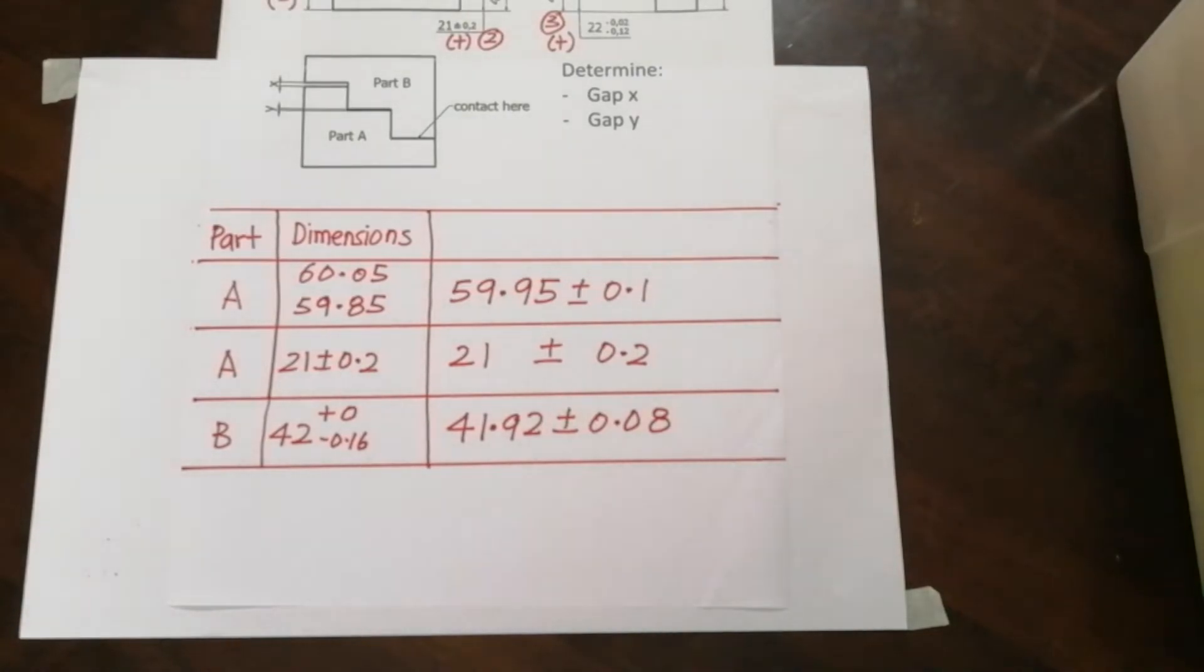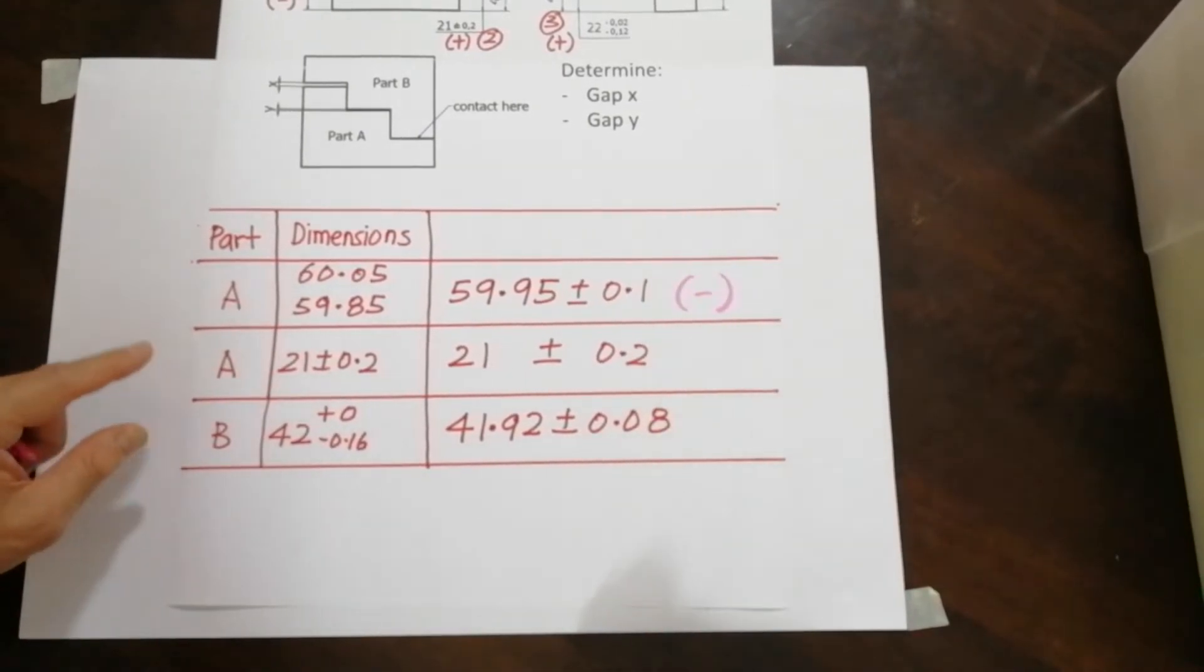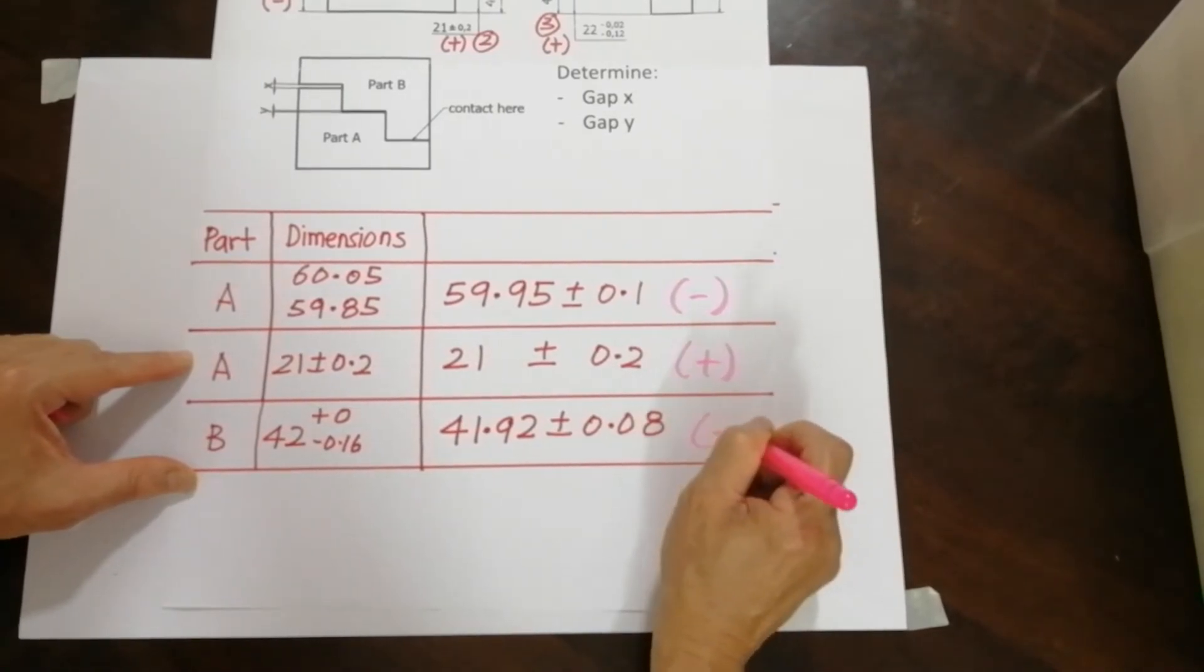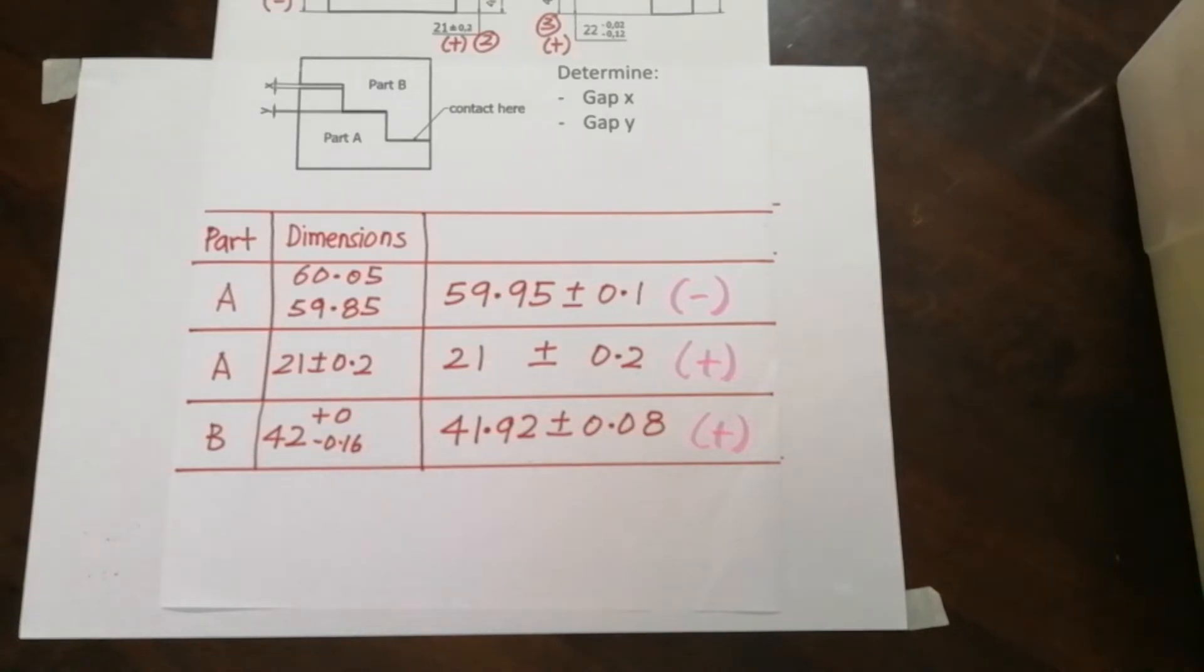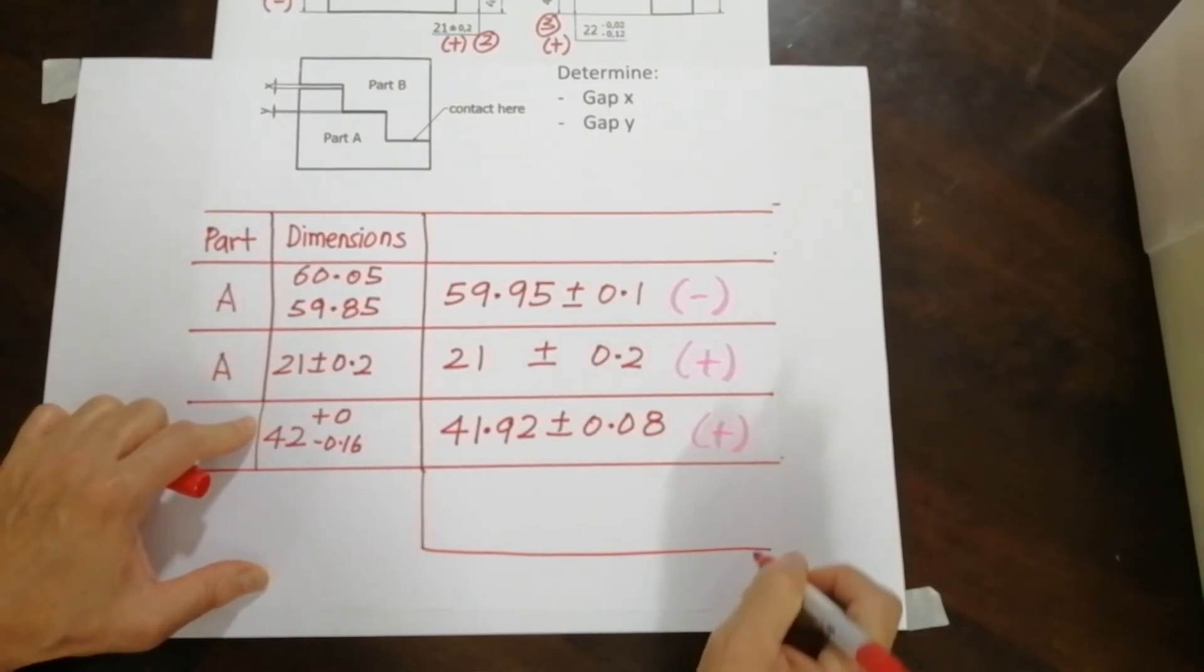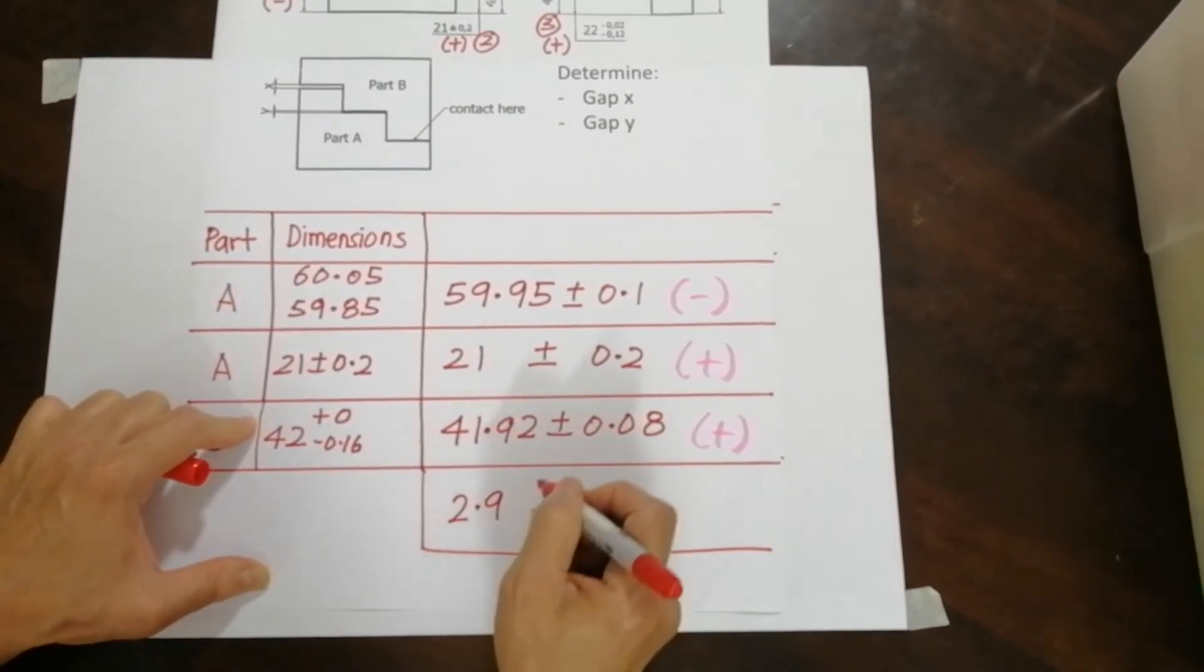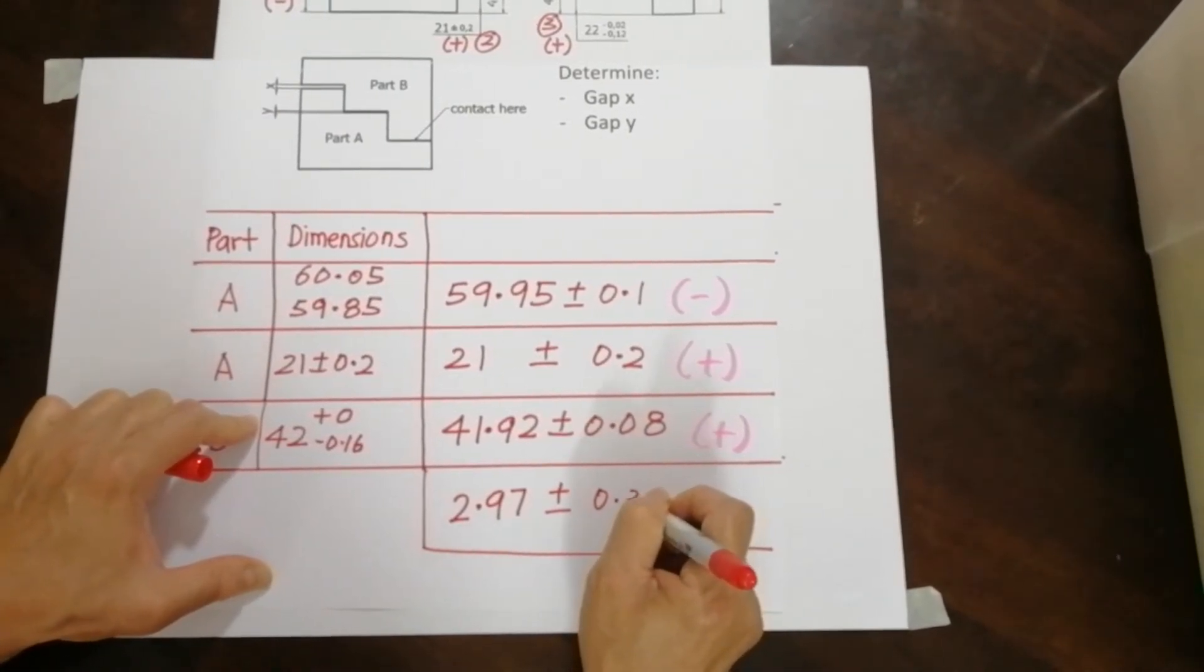And from here now, I need to put in the sign. So the first dimension is going to be negative, second dimension is going to be positive, and the third dimension is also positive. So from here I can calculate the value. So the value here is 2.97 plus and minus 0.38.